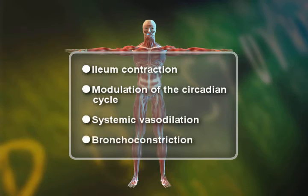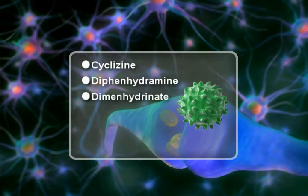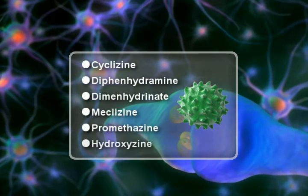Examples of antagonists are cyclazine, diphenhydramine, dimenhydrinate, meclazine, promethazine, and hydroxyzine.